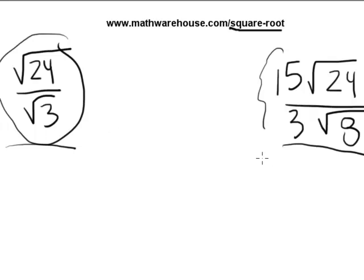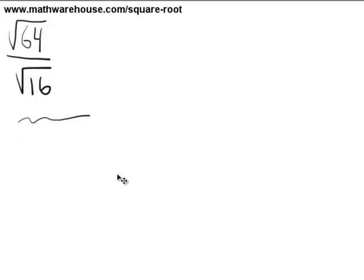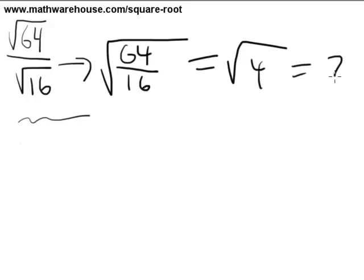Before we attempt any of these problems, I want to make sure we're familiar with a rule we'll be applying a lot. Consider the square root of 64 over the square root of 16. The rule is that you can rewrite any division of square roots by housing them under one radical sign. The square root of 64 over the square root of 16 can be rewritten as the square root of 64 over 16. That's 64 divided by 16, which is 4, and the square root of 4 is 2.